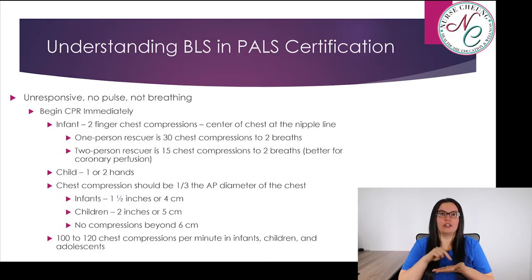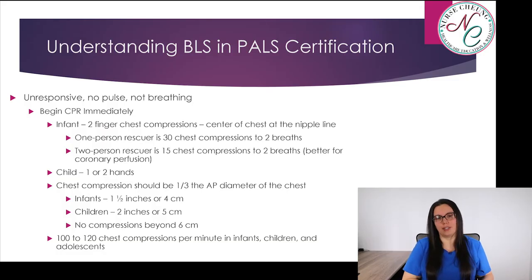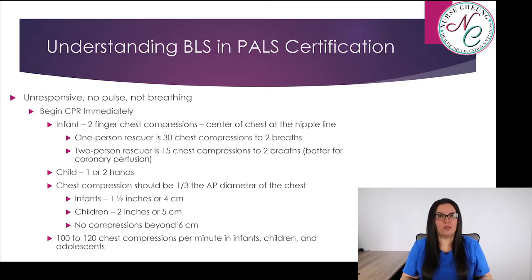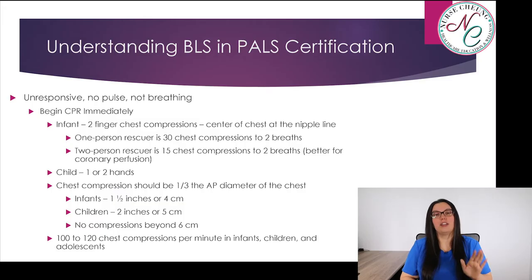In an infant, we do two-finger chest compressions, centered on the chest at the nipple line. One-person rescuer is 30 chest compressions to two breaths. Two-person rescuer is 15 chest compressions to two breaths — it's better for coronary perfusion as part of the PALS guidelines. For a child or an infant, depending on how big they are, you can do either a one-handed or two-handed CPR technique. Chest compressions should be one-third the AP diameter of the chest — in infants that's one and a half inches or four centimeters, and in children that's two inches or five centimeters.